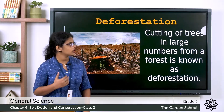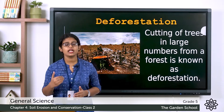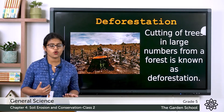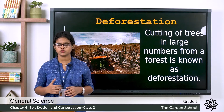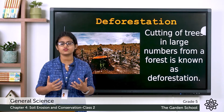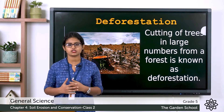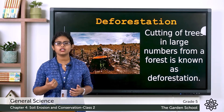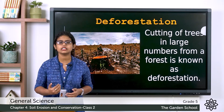Now let's learn about the human causes of soil erosion. Soil erosion can also happen due to human activities such as deforestation and overgrazing. Deforestation means cutting down or clearing a large number of trees from a forest.